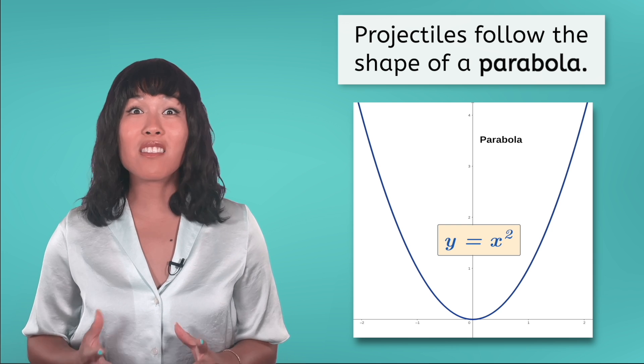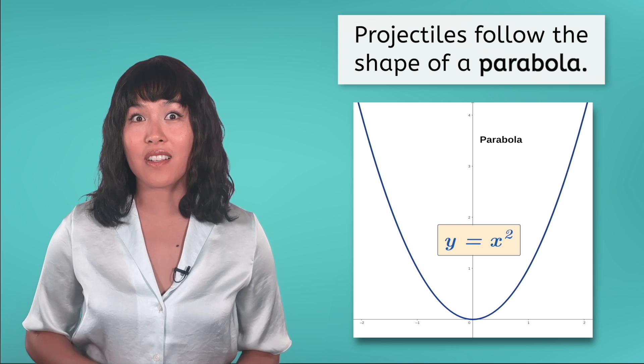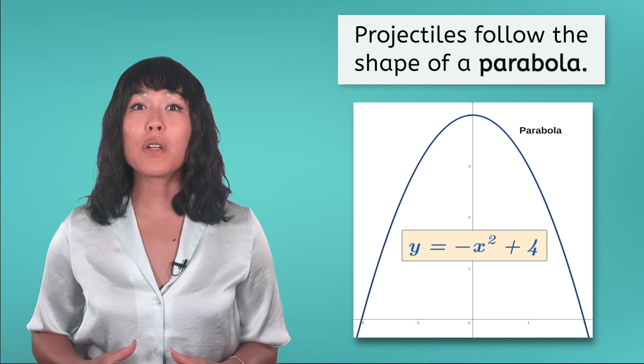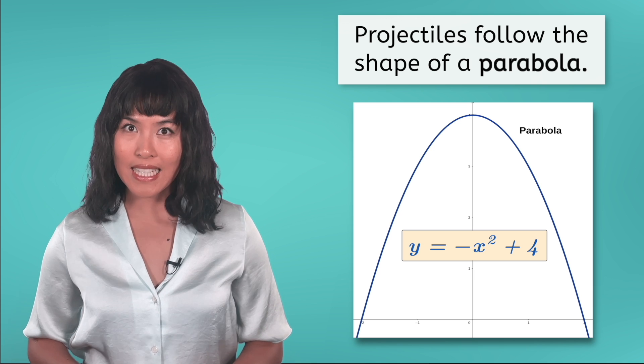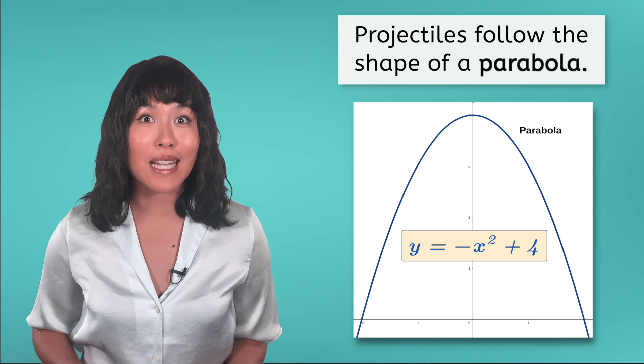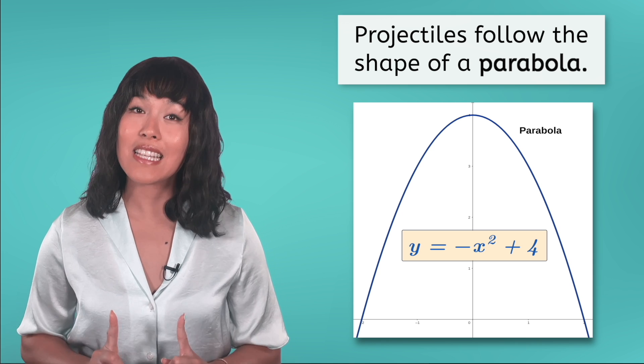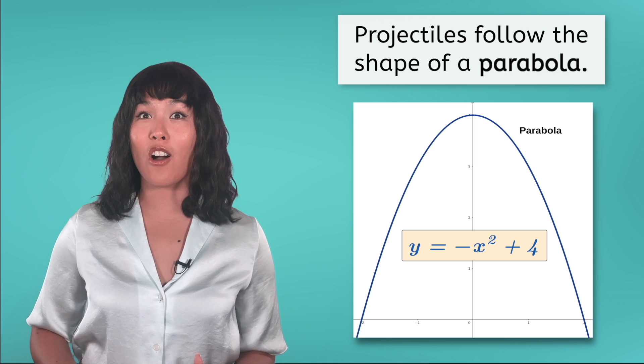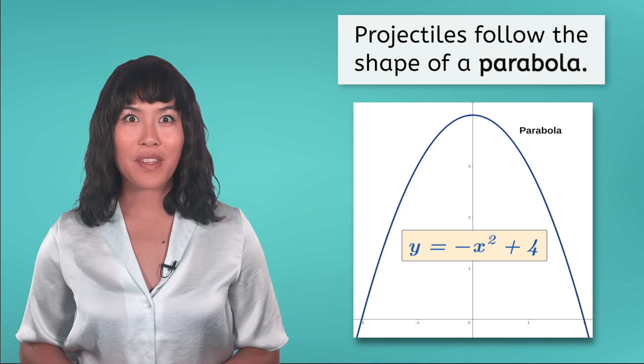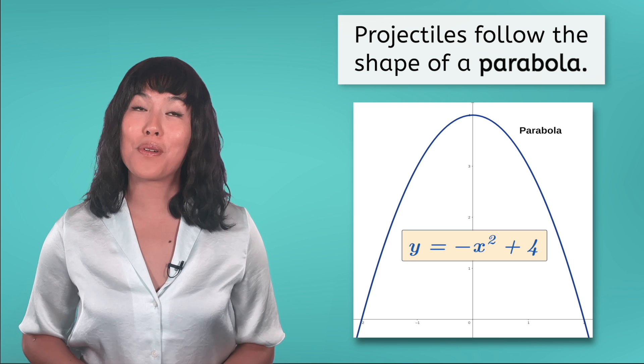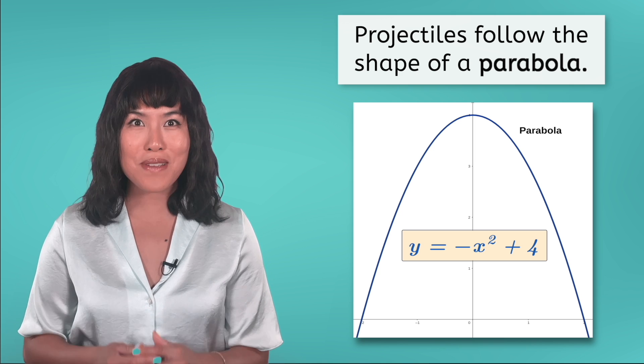In its current form, it may not look like the shape you expect a projectile to take. But, if we were to make the x squared term negative, the graph would flip upside down. And suddenly, this does seem to represent the path that a launched object might follow. This is another great example of how math and science can be used together.